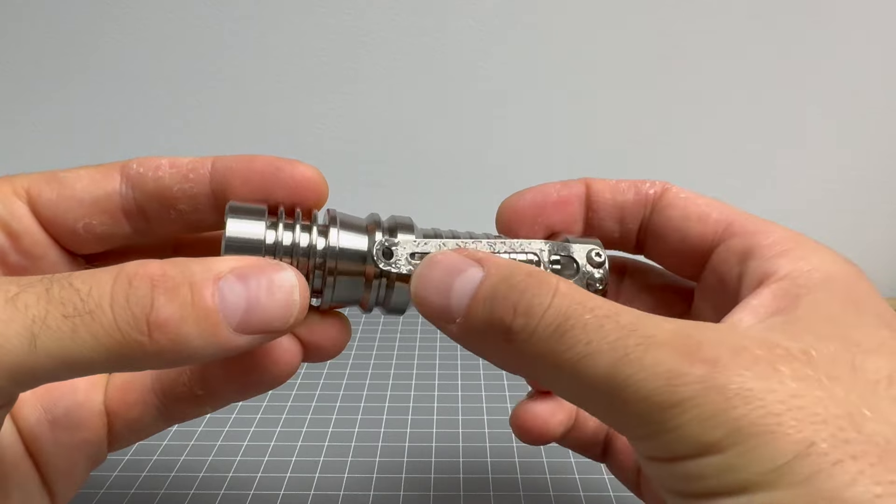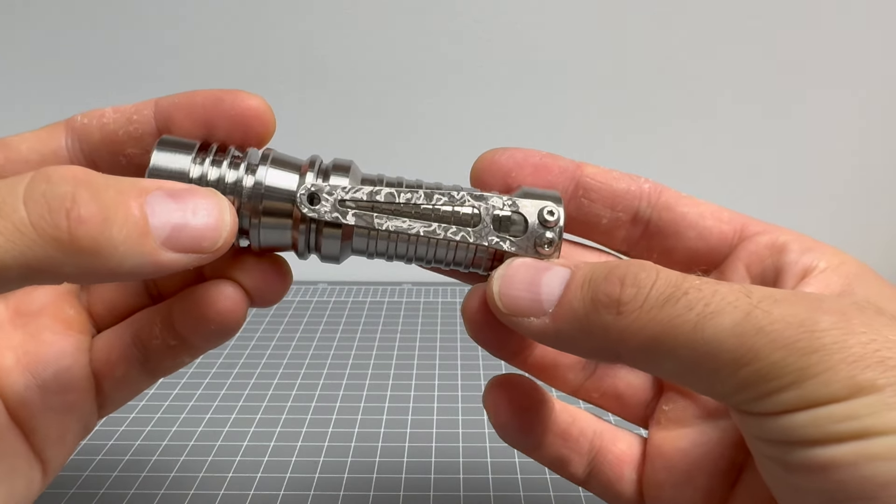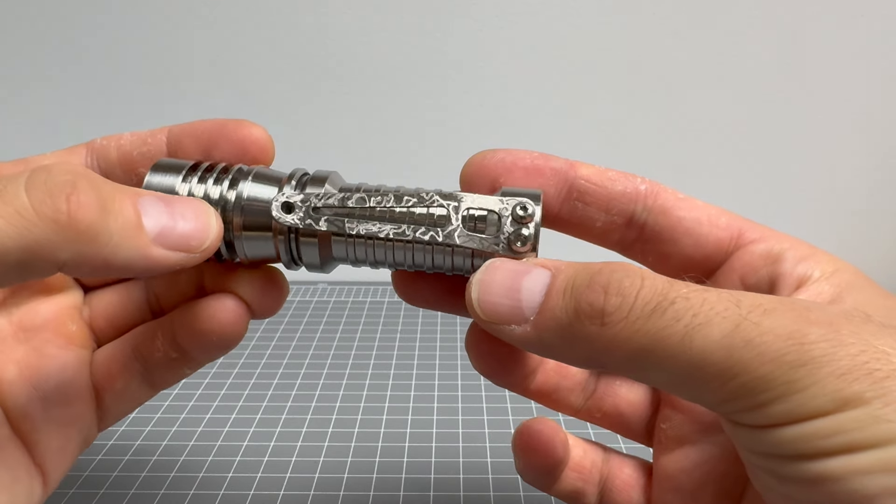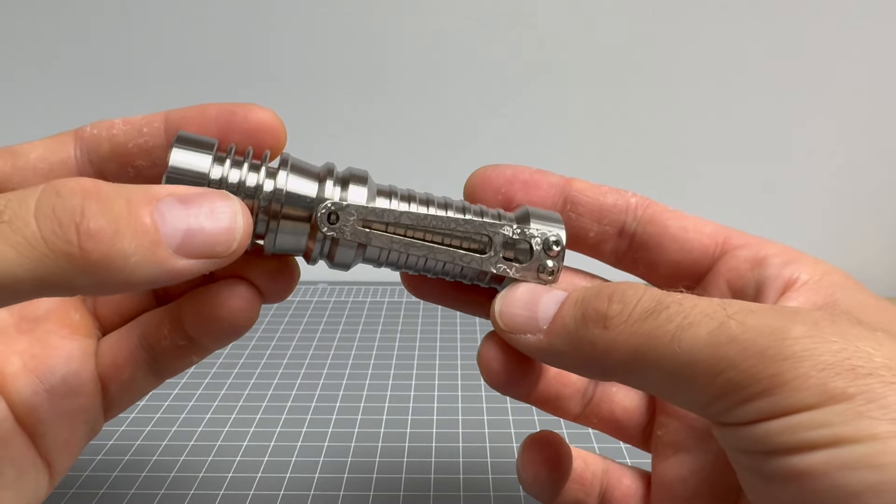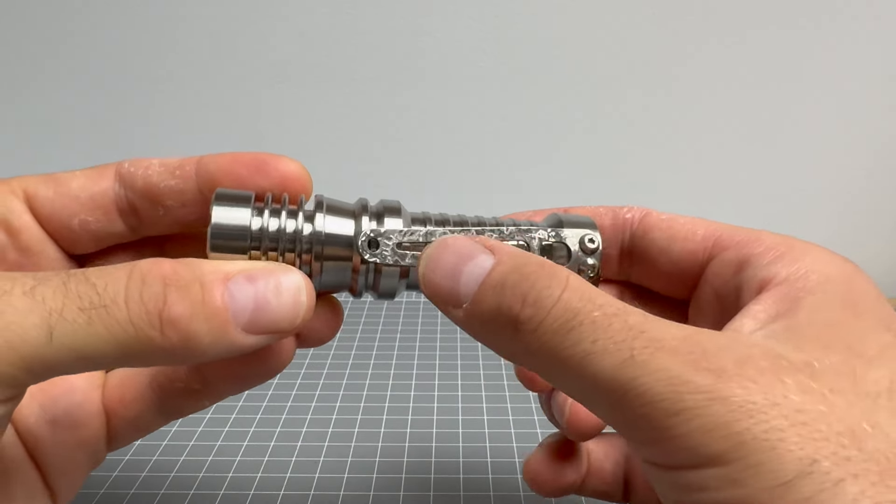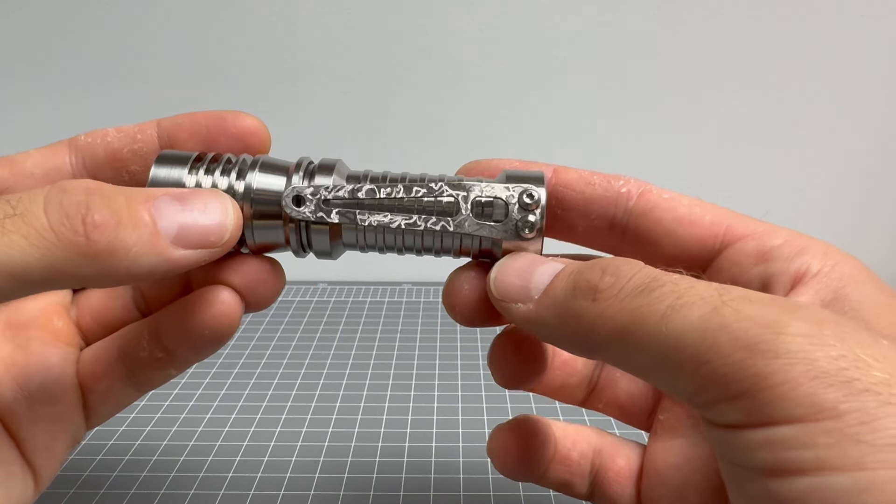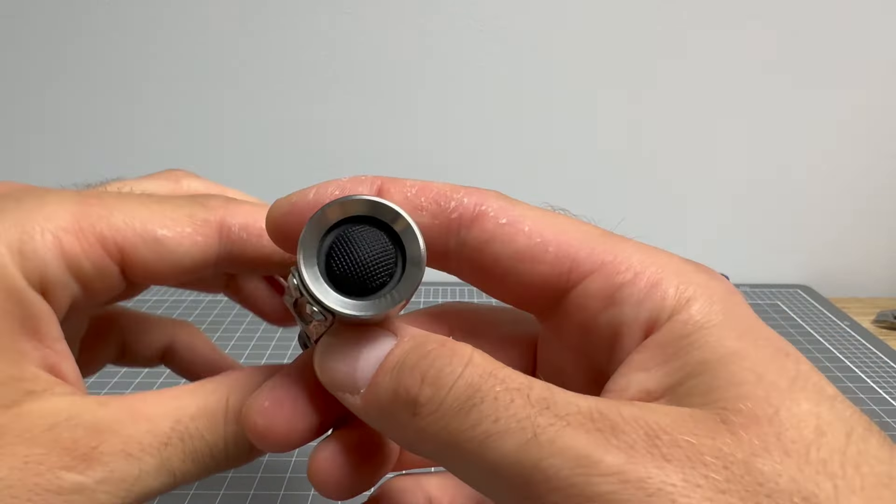Now, look at that pocket clip. Cracked ice, I believe it's called. And that is just absolutely phenomenal. It's almost worth removing and framing. It's that nice. It is just spectacular. It really, really is. Now, down the end here...